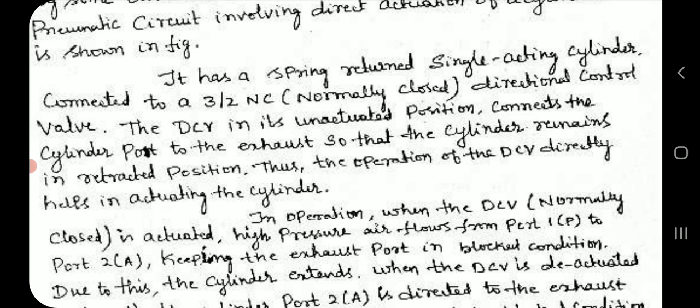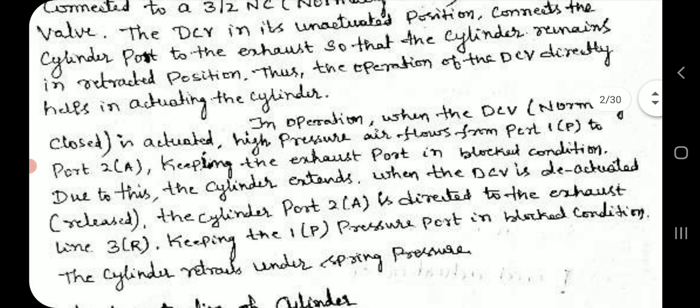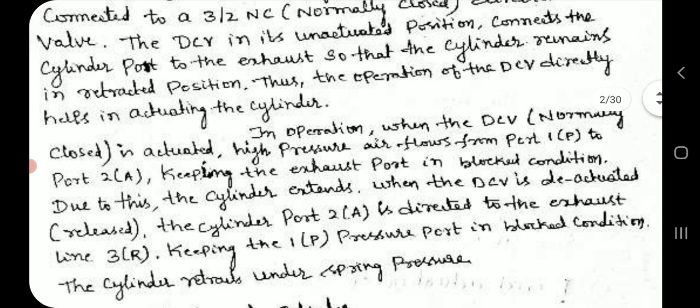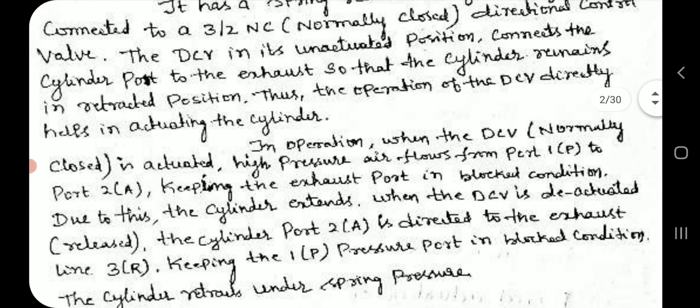In operation, when the normally closed directional control valve is actuated, high-pressure air flows from port P to port A, keeping the exhaust port in a blocked condition, causing the cylinder to extend. When the directional control valve is released, the cylinder port A is directed to the exhaust port R, keeping the pressure port P in blocked condition, and the cylinder retracts under spring pressure.